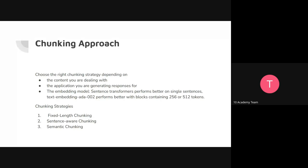Also remember that when retrieving chunks you use semantic similarity based on embeddings. Embedding models work differently depending on which one you use — for example, Sentence Transformers work better with single sentences, while text-embedding-ada-002 from OpenAI performs better with blocks containing up to 250 to 500 tokens. You have to keep the embedding model in mind and how it measures semantic similarity between your prompt and the chunks in your vector store.